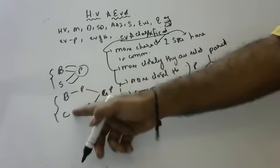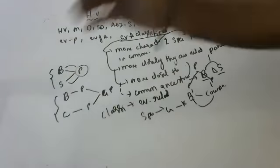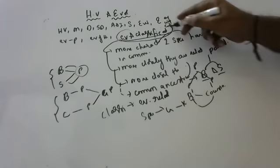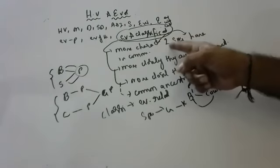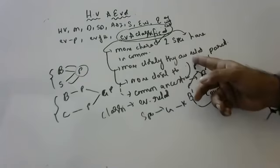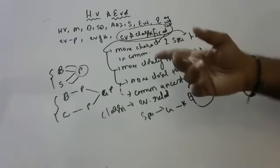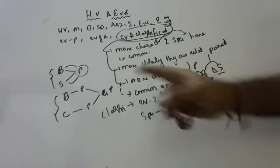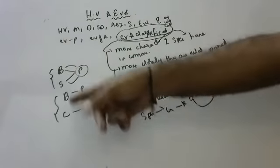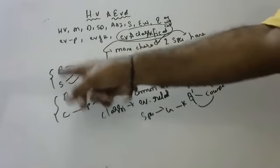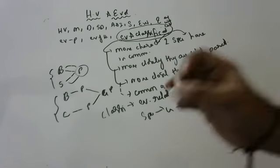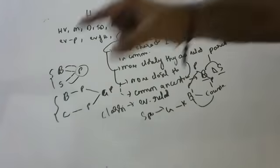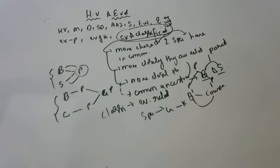Whenever this question comes in the exam, write these points: the more characteristics two species have in common, the more closely they are related; the more closely they are related, the more recently they have common ancestors. Give the example — brother and sister have common parents, brother and first cousin share a grandparent — so they belong to one species. When classifying organisms, it should reflect their evolutionary relationship.